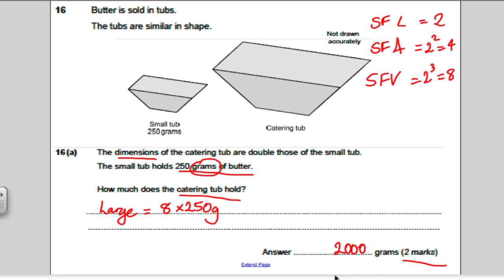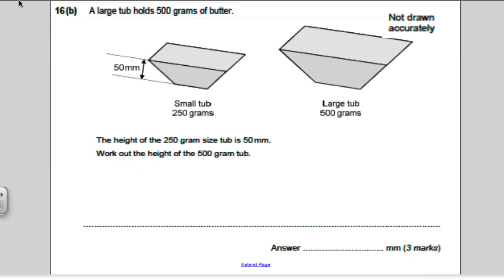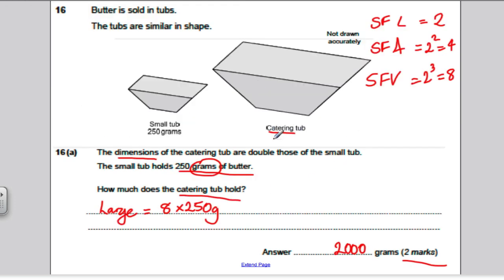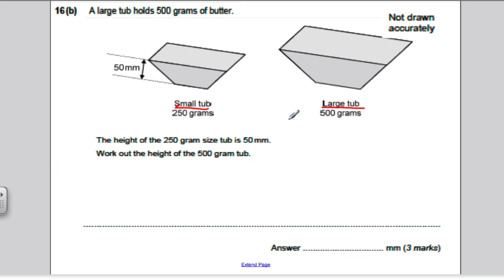Have a go at the next part of this same question with the same picture here. Pause the video, have a go, mark your work against mine. This time we're dealing with a small tub and a large tub. It tells us that the height of the small one is 50 millimeters, and it wants us to work out the height of the large one.